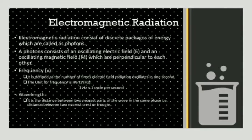What is electromagnetic radiation? It consists of discrete packages of energy which are known as photons. Photons consist of an oscillating electric field and oscillating magnetic field which are perpendicular to each other. It comprises frequency and wavelength. Frequency is defined as the number of times an electric field radiation oscillates in one second, and its unit is Hertz. Wavelength is the distance between two nearest points of a wave in the same phase, that is the distance between nearest crest or nearest trough.